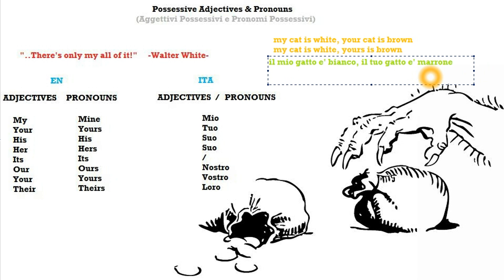Now let's have a look at how we can contract the second part of the sentence and use the possessive pronoun instead of the possessive adjective together with the noun — so basically we get rid of 'cat', we don't repeat it. The first part stays the same: 'il mio gatto è bianco.' Now we want to say 'yours is brown': 'il tuo è marrone.'